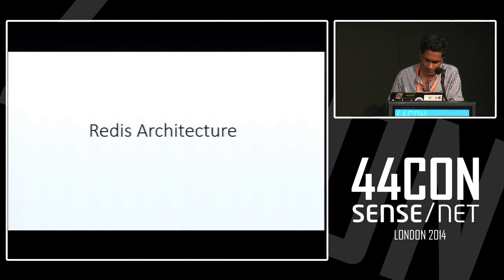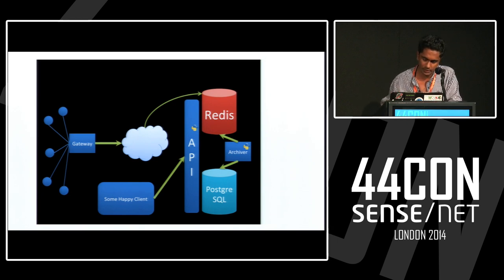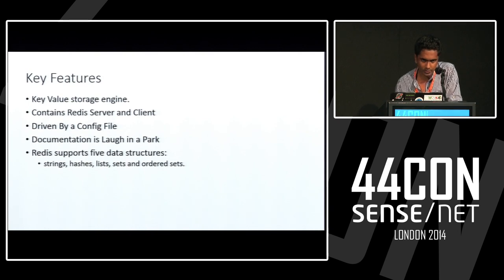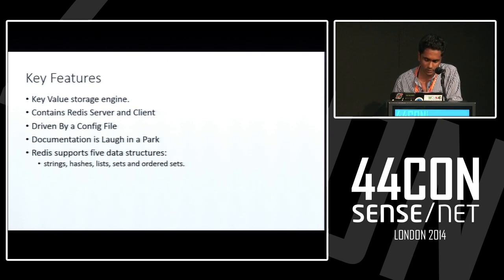Let's have a look at the Redis architecture. You have a client, the Redis API, and Redis connected to it — you can even connect to a PostgreSQL database if you want. Some key features of Redis: it's a key-value storage engine, has a Redis server and client, is driven by a configuration file, and the documentation is actually quite revealing. If you read the Redis documentation carefully, you'll find a whole load of vulnerabilities. Redis supports five data structures: strings, hashes, list sets, and ordered sets.